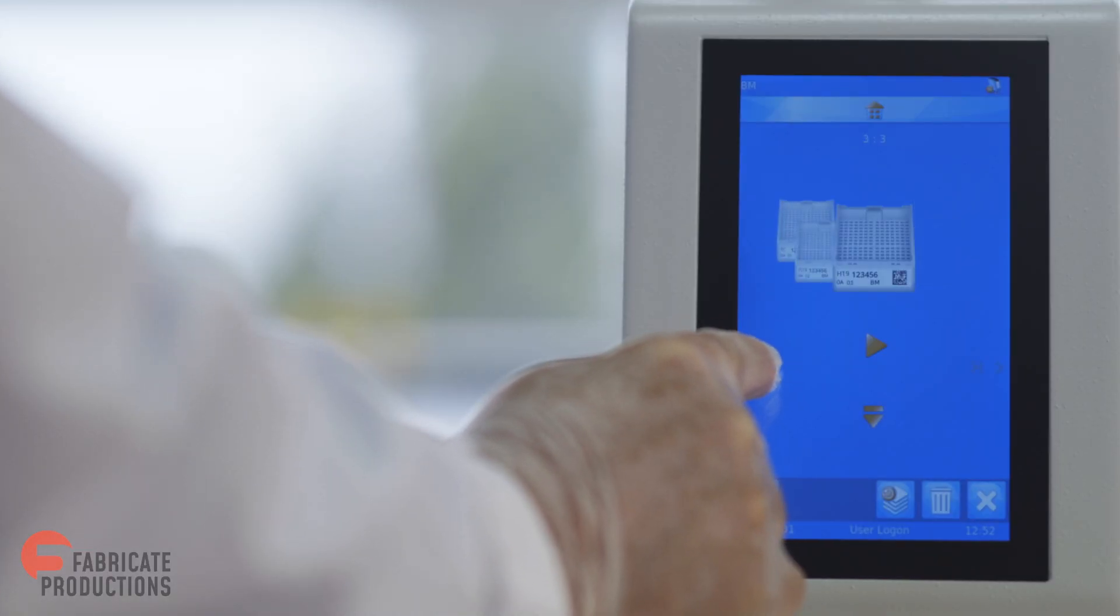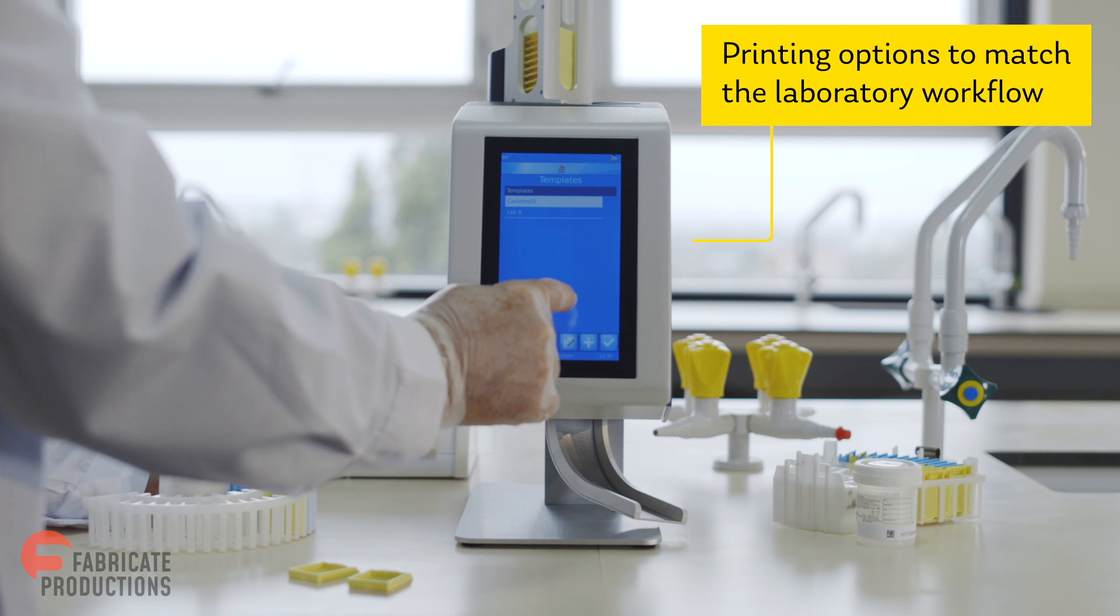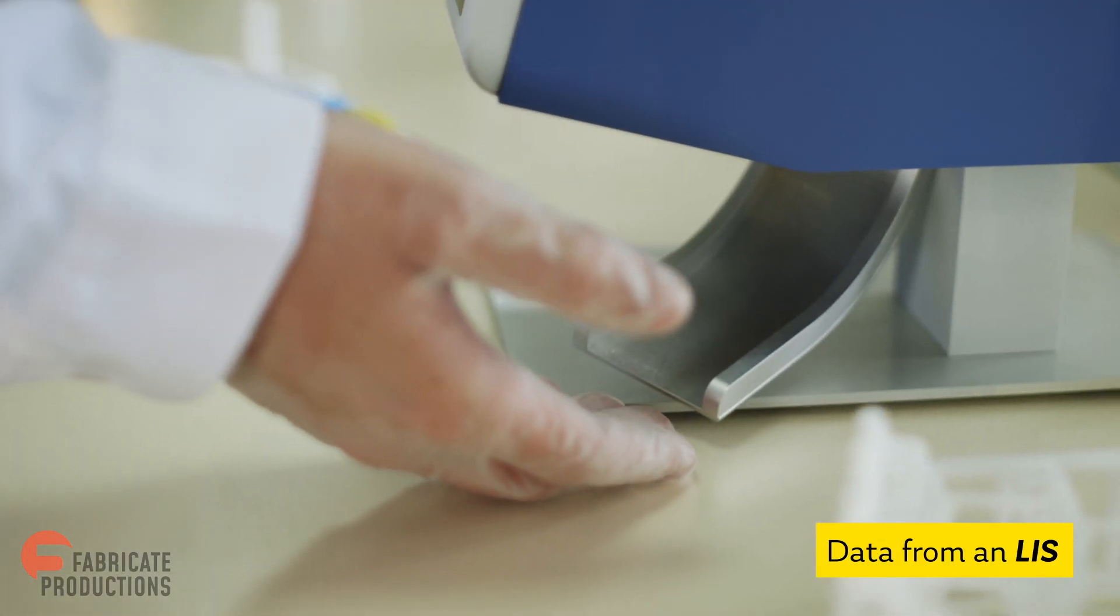The printer can be driven in a number of different ways to give you control and flexibility. A cassette can be printed automatically on receipt of data from an LIS.